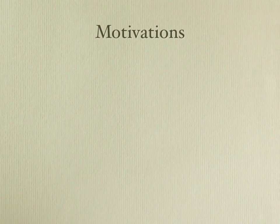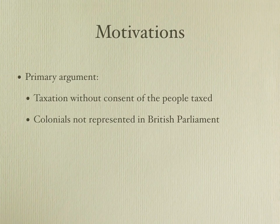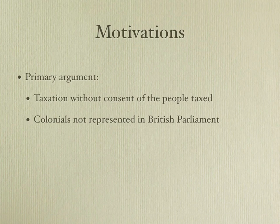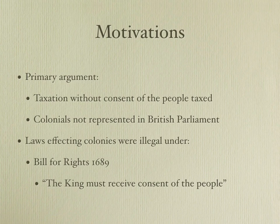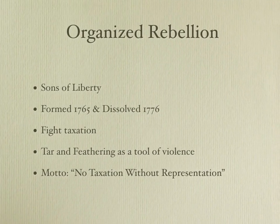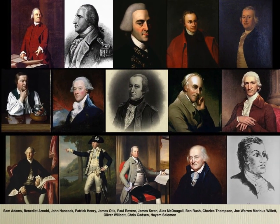The primary argument for the revolution was simple: taxation without representation. Parliament had enacted a series of tax laws, which your book will cover, and the colonials made the argument that you cannot tax us as long as we're not represented in Parliament. Your book will cover the concept of virtual representation and why Parliament believed colonials did not need to be represented. Going back to the Bill of Rights of 1689, they asserted that the king must receive consent of the people — hence, taxation without representation. The Sons of Liberty organized themselves to fight this taxation without representation.